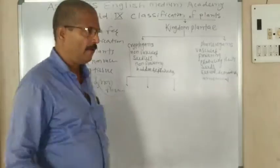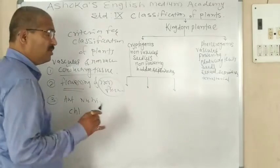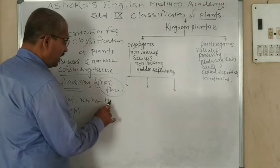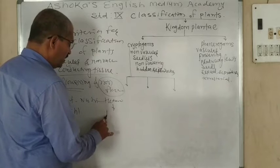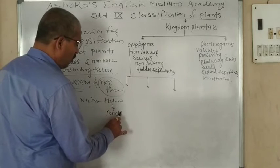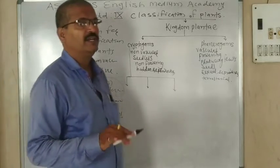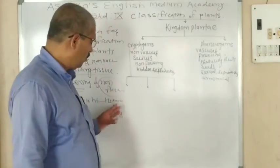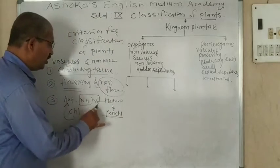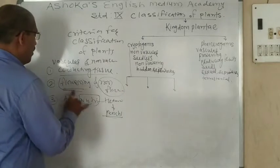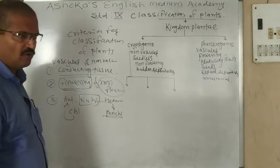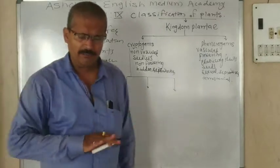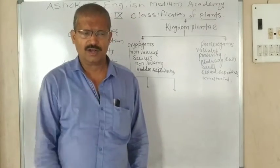Plants that have chlorophyll produce their own food — they are called autotrophic. Those without chlorophyll cannot produce their own food and depend on others — they are called heterotrophic. So nutrition — autotrophic or heterotrophic — is also a criterion. Presence or absence of flowers, and the conducting tissue system, are both important criteria for the classification of plants.